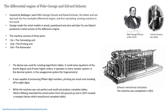Inspired by Babbage's Difference and Analytical Engines, the father-and-son duo George and Edward Scheutz built the first workable differential engine. The machine could both calculate and print. George made initial models in wood, pasteboard and wires, and later his son made the metal version. The machine consisted of three main parts: the calculating unit, the printing unit, and the numerator. The device was used for creating logarithmic tables; it could solve equations of the 4th degree and higher orders, and operates in decimal system.